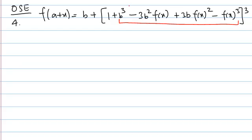So if you look at this expression, this is a perfect cube. This is a perfect cube. So we can write this as f of a plus x equal to b plus, one is not the part of perfect cube, one plus this is b minus f(x) whole cube.